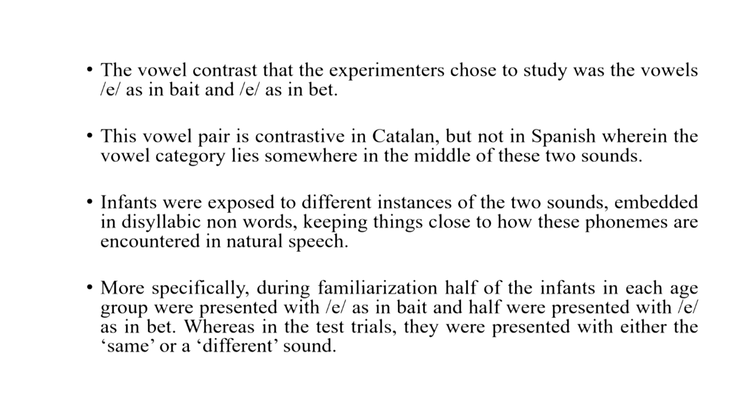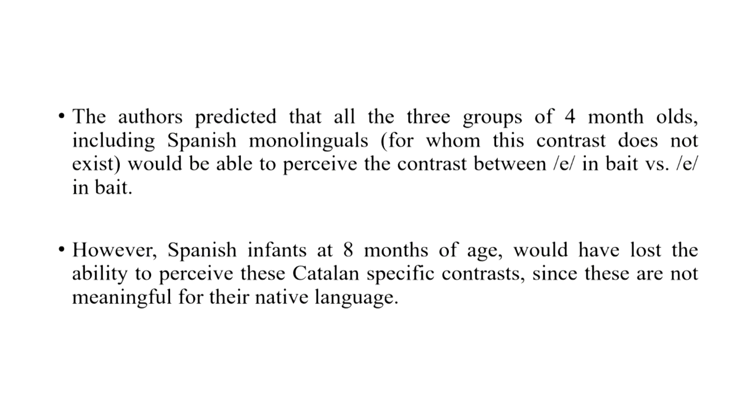What we are going to see is whether the Catalan-Spanish bilinguals make this discrimination well, or whether — as expected — Catalan monolinguals can make it and Spanish monolinguals cannot. Around four months of age the authors predicted that all three groups would be able to perceive this phonemic contrast, given the language-general ability that exists up to around four to five months of age. However, Spanish infants at eight months of age might have lost this generic ability of making these phonemic distinctions.